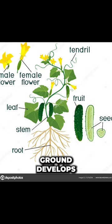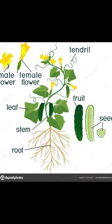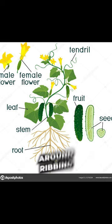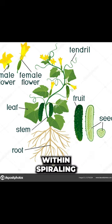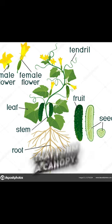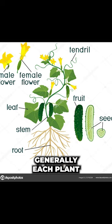Botanically, the cucumber plant roots in the ground, develops long stems with tendrils, and grows up trellises, wrapping around ribbing with thin, spiraling tendrils. The plant has large leaves that form a canopy.